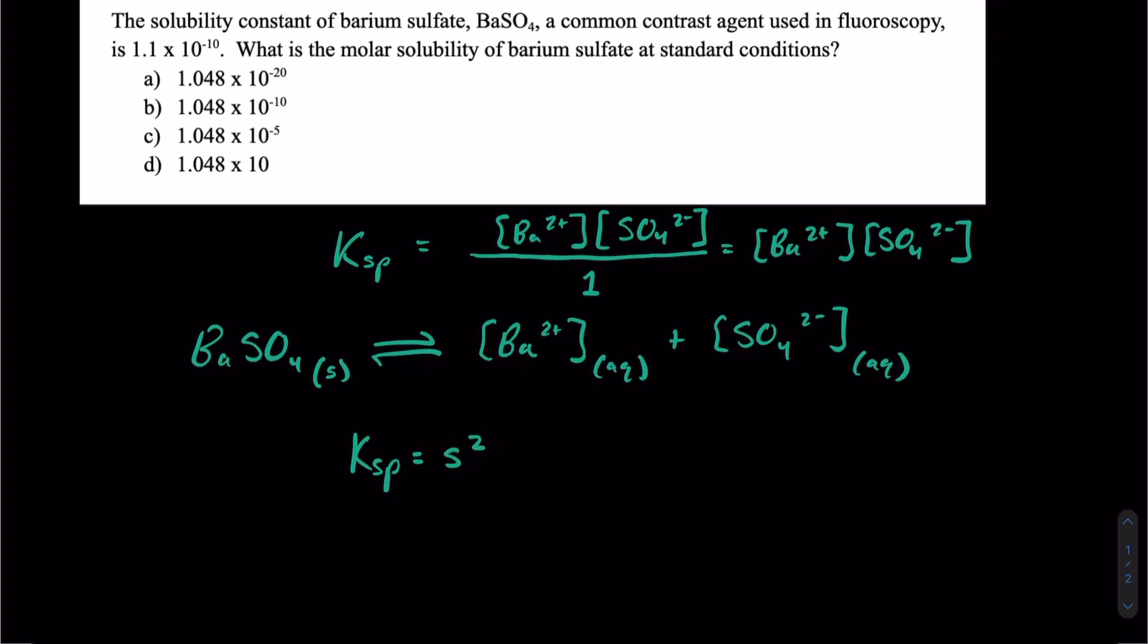So they did give us the value for Ksp, which is 1.1 times 10 to the negative 10. And we're saying that's equivalent to S squared. So in order to get S by itself, we know we have to take the square root of 1.1 times 10 to the negative 10.